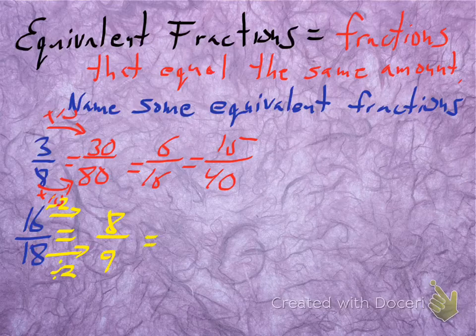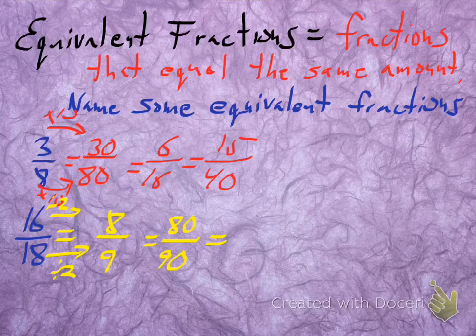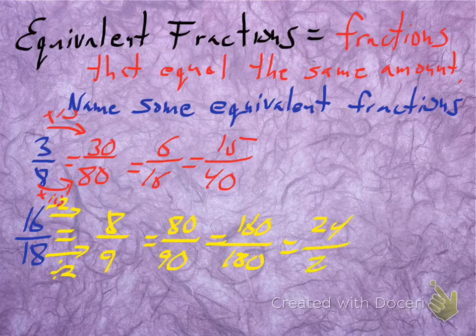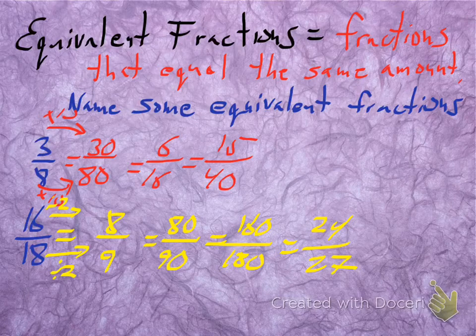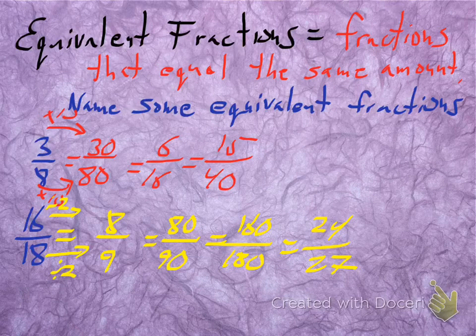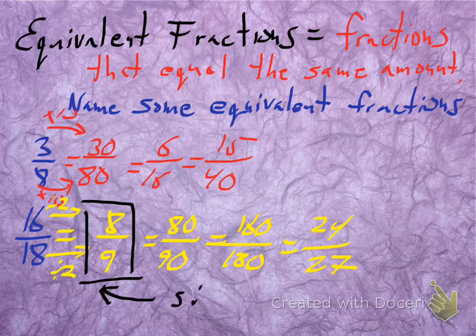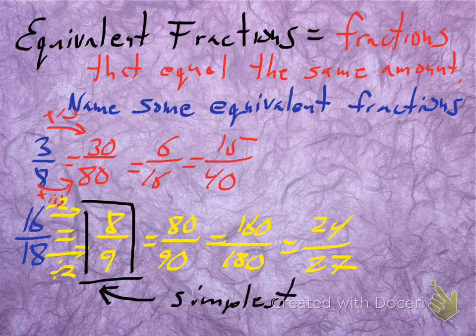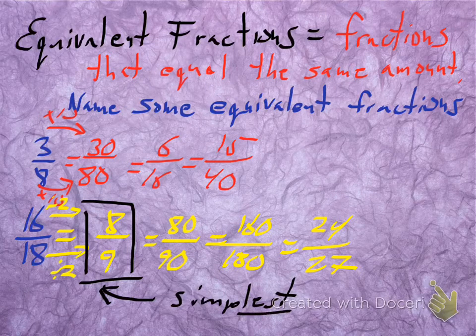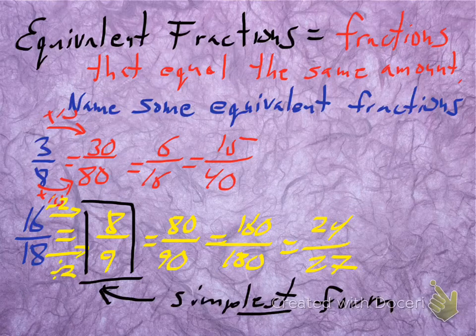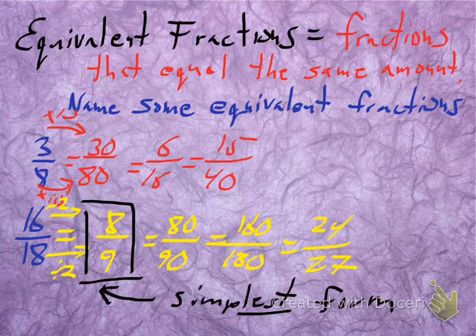So 16/18 equals 8/9. I can find other fractions from 8/9. I could multiply by 10 and get 80/90, or from the original get 160/180. I could do 8/9 times 3 and get 24/27. These are all equivalent fractions. They all equal the same amount.